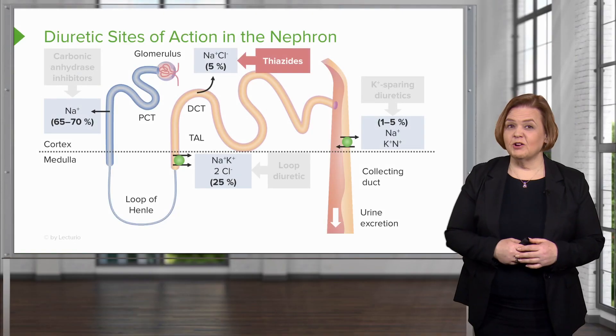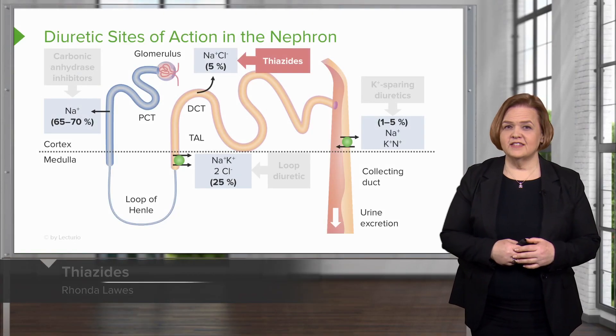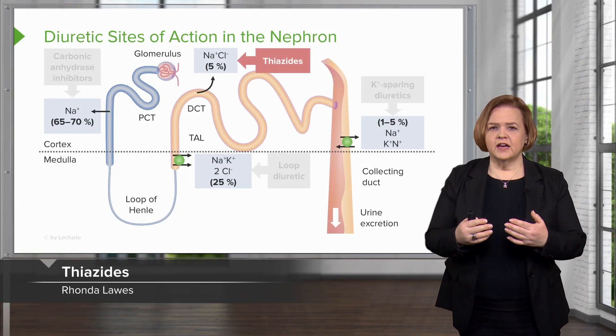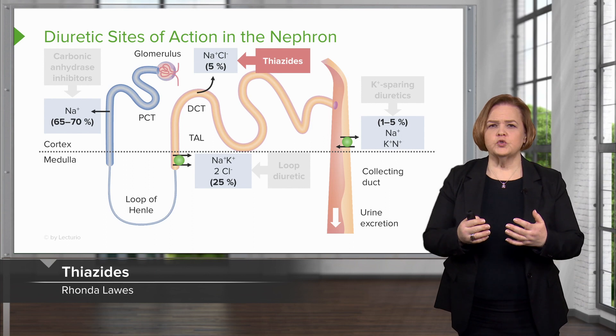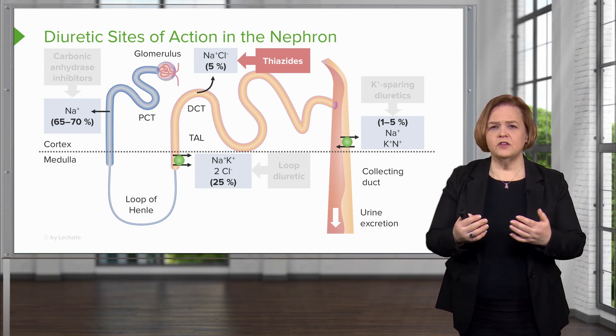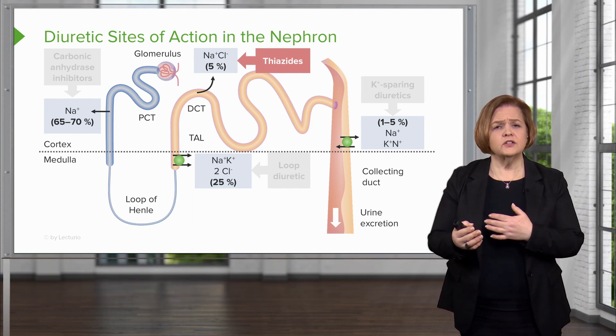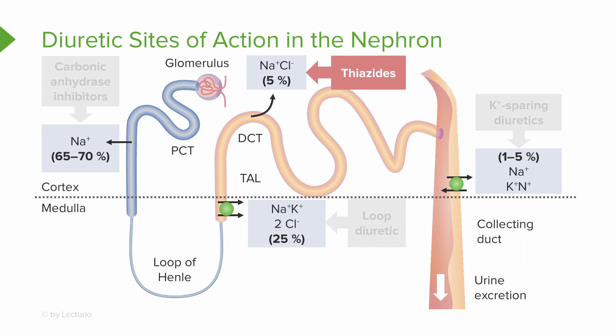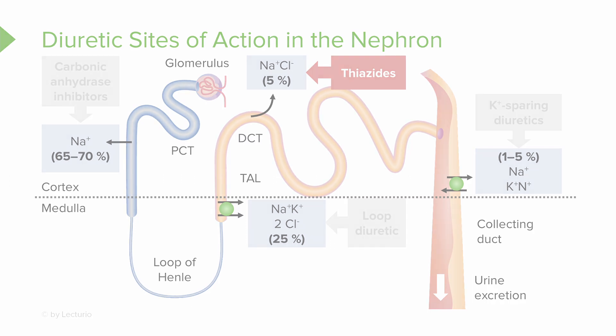Let's get started with the thiazides. With loop diuretics, about 25% of sodium and electrolytes are lost, but with thiazide diuretics it's just 5%. So these two are kind of close and have some adverse effects in common, but the loop diuretic is going to be much stronger than a thiazide diuretic.